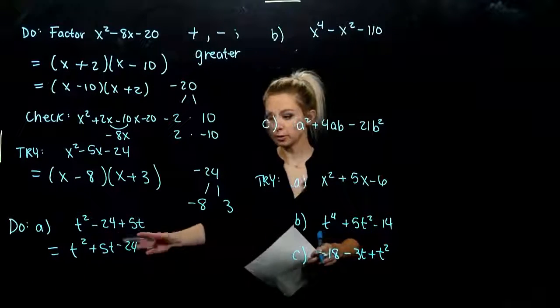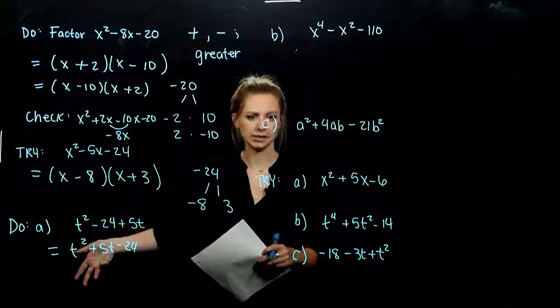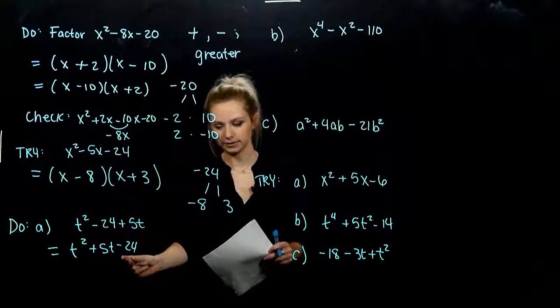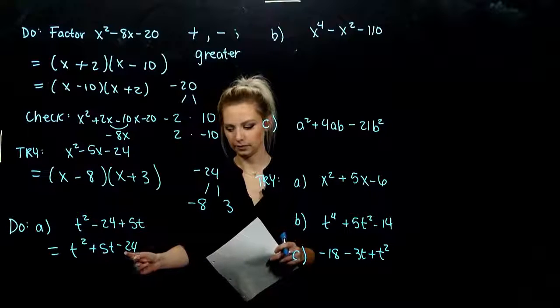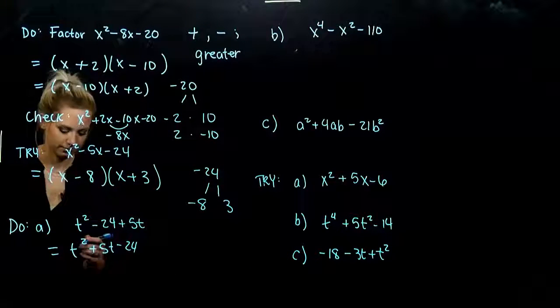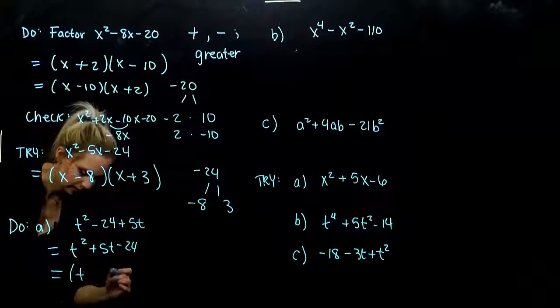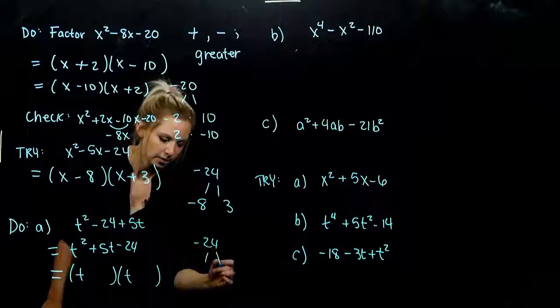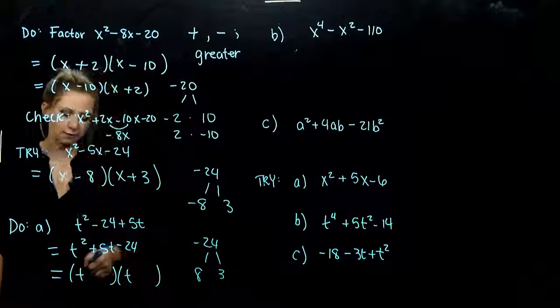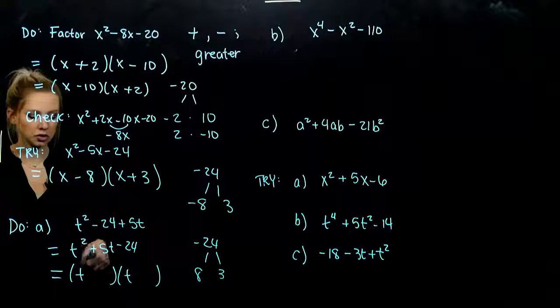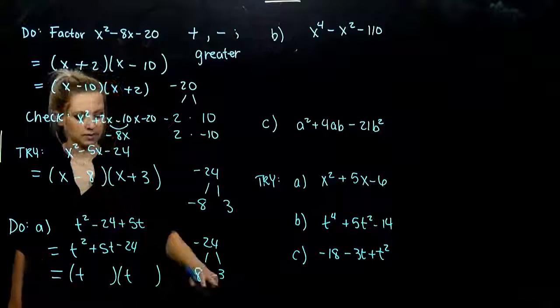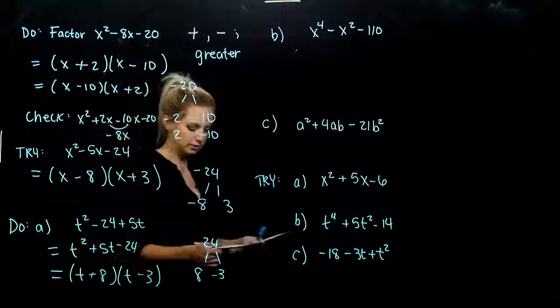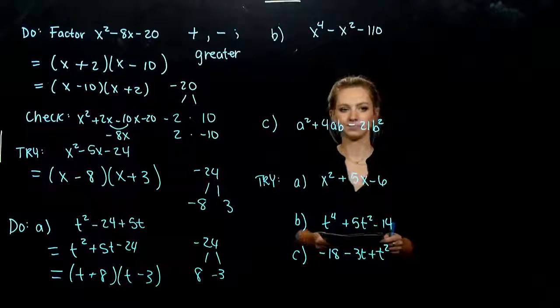So we've got t squared plus 5t minus 24. And it looks pretty similar to our previous one, but now we're dealing with t's. That's fine. And the signs are switched around. So I need multiples or factors that are going to multiply to negative 24, add to positive 5. And again, there's a 1 out on the front. We know it's going to be a t and a t. And we already have it written up here. But I know that 8 and 3, some combination will give me 5. And I need the larger term to be positive in this case, because when we add them, we want to get positive 5. So t plus 8, t minus 3, or switching the order around. We can always FOIL it out and check.